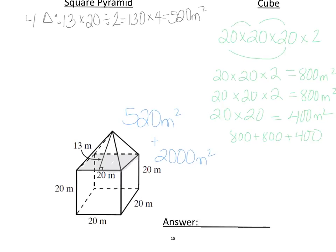And when we combine those, the surface area for that entire composite figure is 2,520 meters squared.